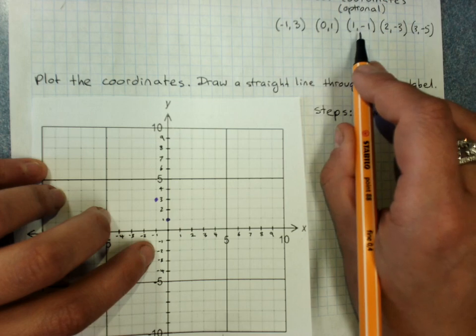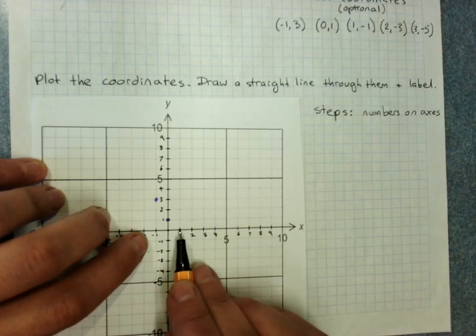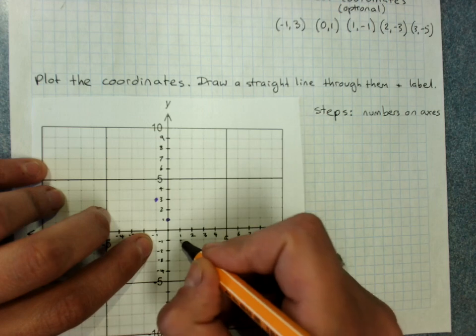0 on the x axis and 1 on the y axis. 1, negative 1. 1 on the x, negative 1 on the y.